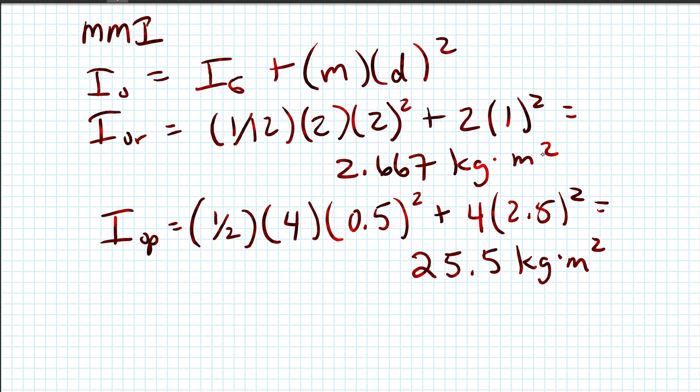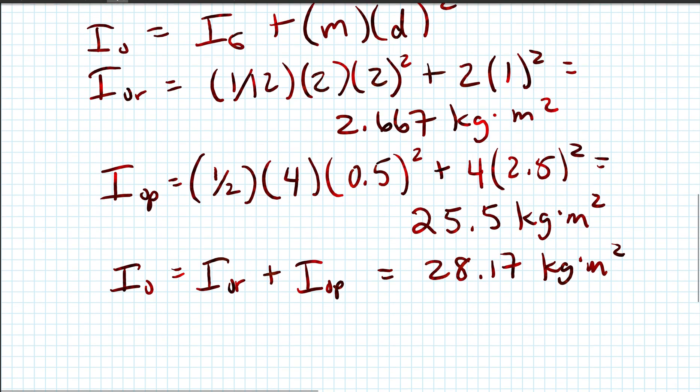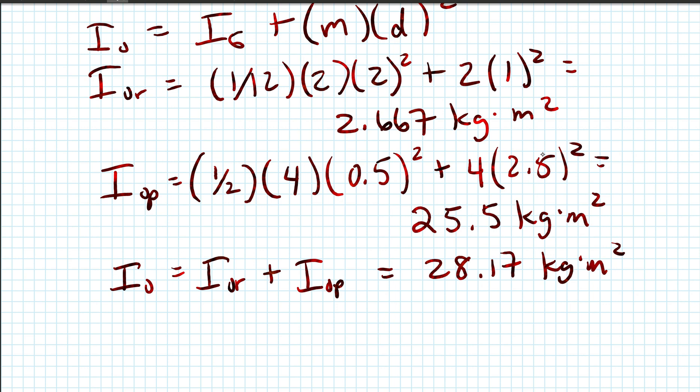So then we're going to add the two mass moment of inertias about point O. I sub O equals I sub O R plus I sub O P, which gets us 28.17 kilograms meters squared. The total mass M equals 6 kilograms. Thus the radius of gyration about O is K equals the square root of I sub O over M, which equals the square root of 28.17 over 6 equals 2.17 meters.